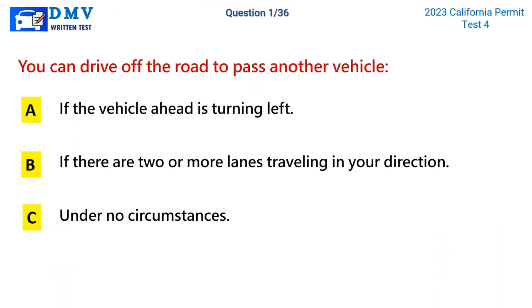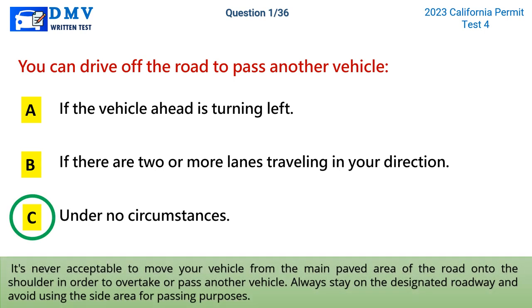Question 1: You can drive off the road to pass another vehicle. A) if the vehicle ahead is turning left, B) if there are two or more lanes traveling in your direction, C) under no circumstances. The correct answer is C. Under no circumstances is it acceptable to move your vehicle from the main paved area onto the shoulder to overtake or pass another vehicle. Always stay on the designated roadway.